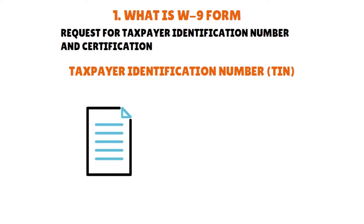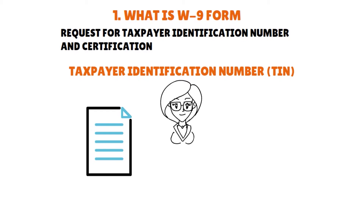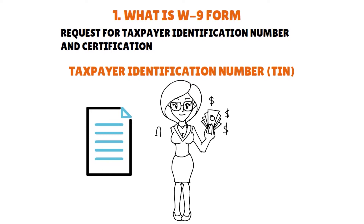This form acts as an agreement that you, as a contractor or freelancer, are responsible for withholding taxes from your income. When you're a full-time employee, your employer withholds some of your income to cover federal income taxes and FICA taxes, which include Medicare and Social Security taxes.